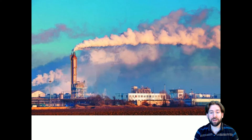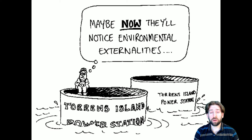For example, here we have an externality of all of this air pollution coming from a factory and going over to the surrounding area. An externality of whatever they're producing would be that the air quality around that place is lower than it should be. Here's a cartoon that shows how negative externalities could work with environmental science — it says 'maybe now they'll notice environmental externalities,' and you see a worker sitting on top of power stations. Most likely the glaciers have melted from global warming from all of the power station air pollutants.